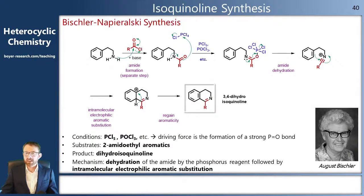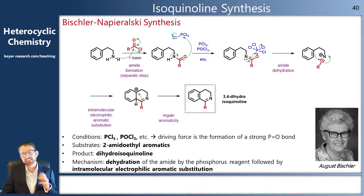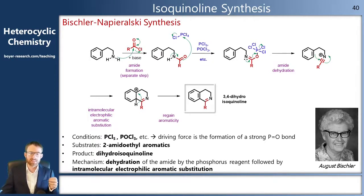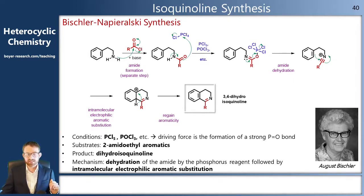If we want a slightly more oxidized version, instead of using an aldehyde or ketone, we can use an amide. This is the Bischler-Napieralski synthesis. First, we need to make our amide — this is a separate step. We take the exact same substrate as before, and now we add a base and acid chloride to make an amide. The amide is the key starting material for this synthesis.